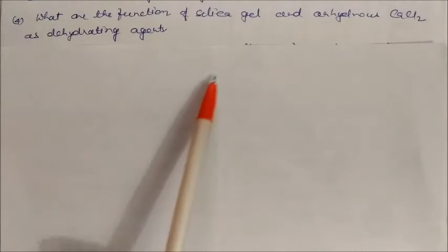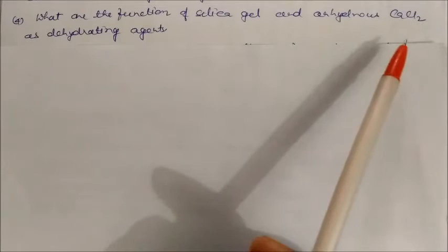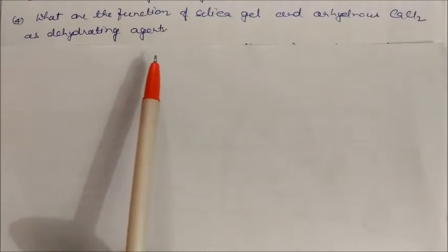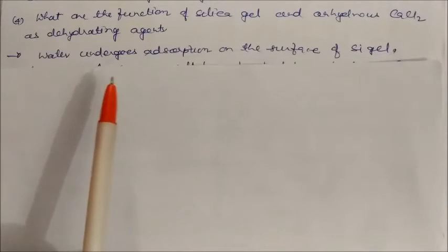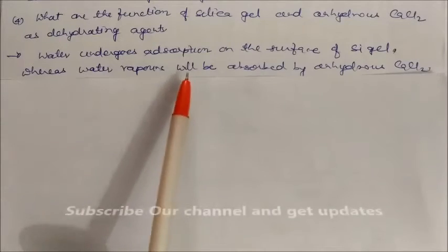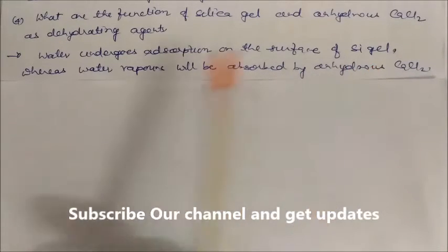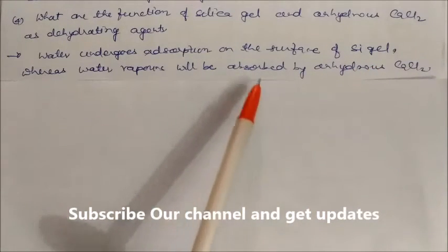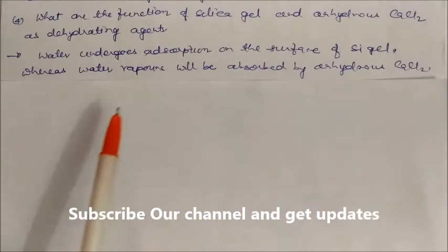What are the functions of silica gel and anhydrous calcium chloride as dehydrating agents? Water undergoes adsorption on the surface of silica gel, whereas water vapors will be absorbed by the anhydrous calcium chloride.